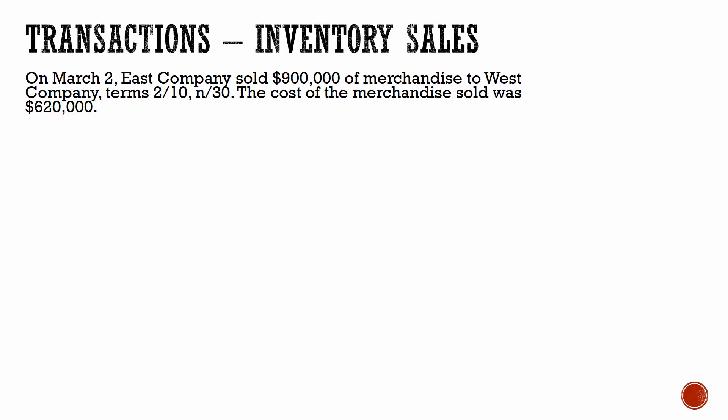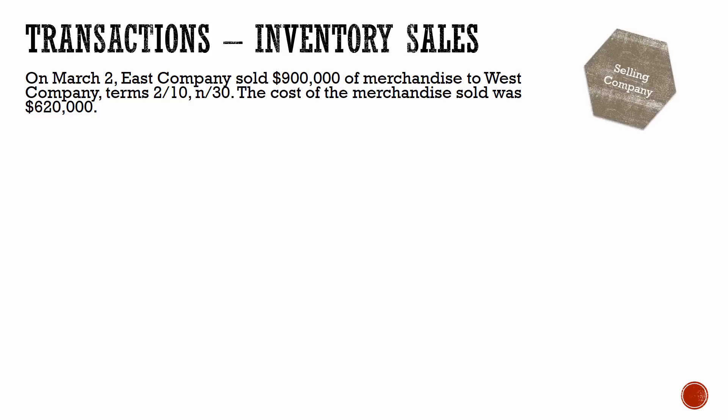On March 2nd, East Company sold $900,000 in merchandise to West Company. The cost of the merchandise sold was $620,000. We are doing the sales journal entries here, and we are East Company in this situation.